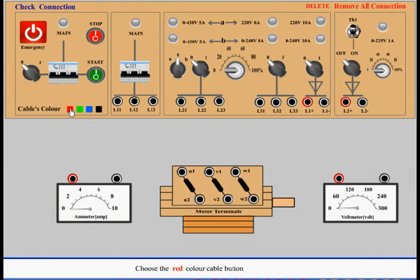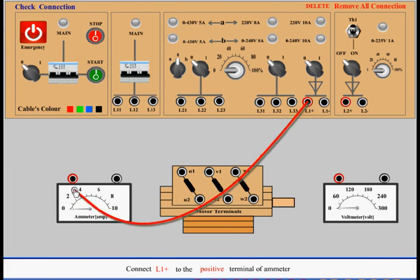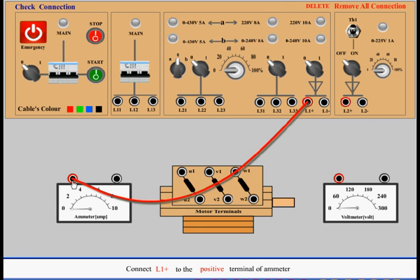Choose the red color cable button. Connect L1 positive to the positive terminal of M meter. Connect U1 to the negative terminal of M meter.